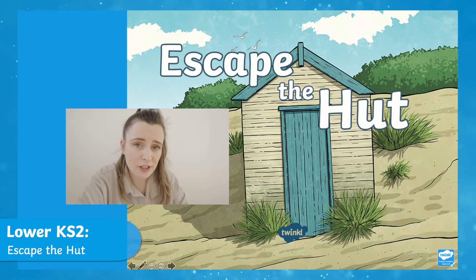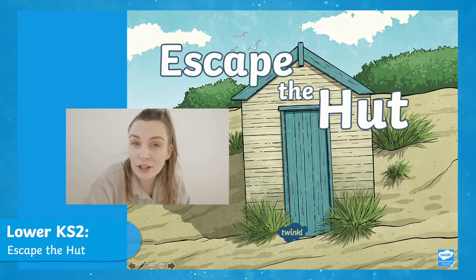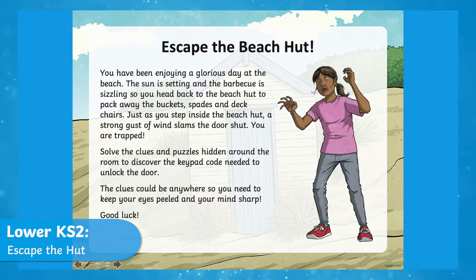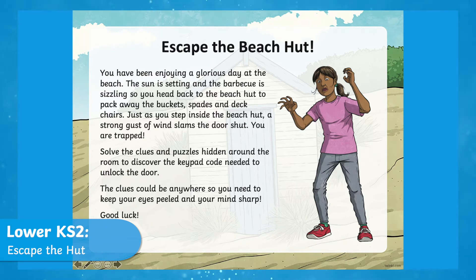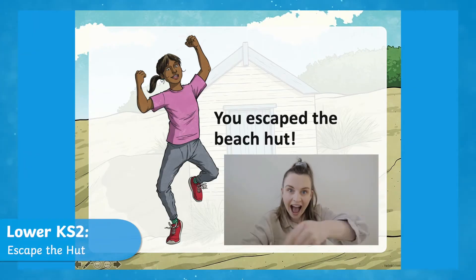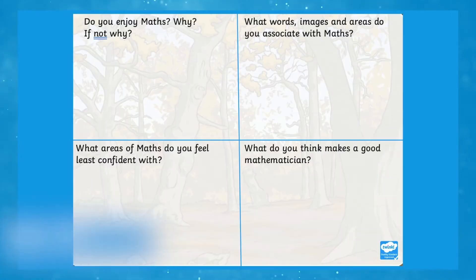Let's take a quick look at what's covered in today's maths activity. You need to escape the beach hut — yes, you need to find the clues to help you escape the hut. You need to solve the clues today to find out the code for the padlock to escape the beach hut. Good luck! Clue for digit one: each image represents a number. Using the images on screen, you'll make the number to escape the beach hut.